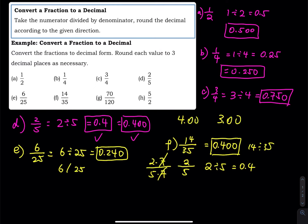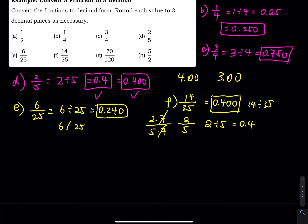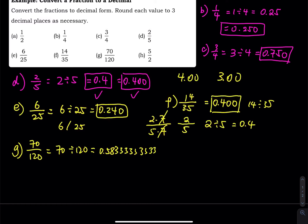Part G is 70 divided by 120. Type that in your calculator and you'll see 0.58 followed by repeating 3s, which means 70 is not evenly divisible by 120. Since we need 3 decimal places and the next digit is not greater than or equal to 5, we do not round up. So it's approximately equal to 0.583.